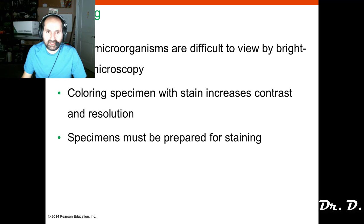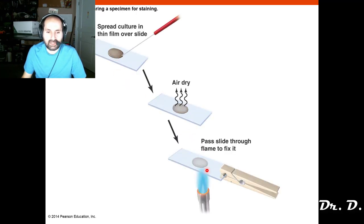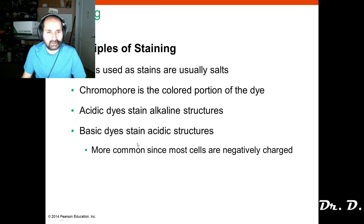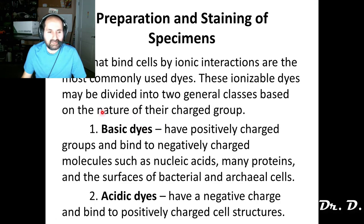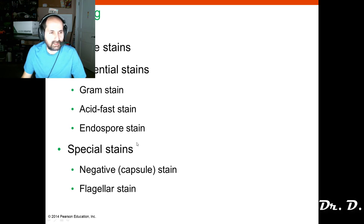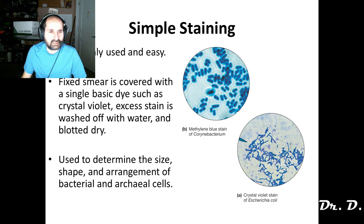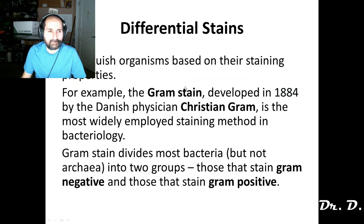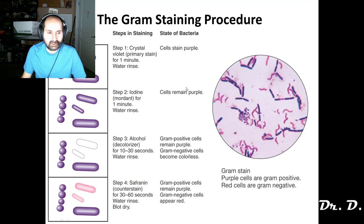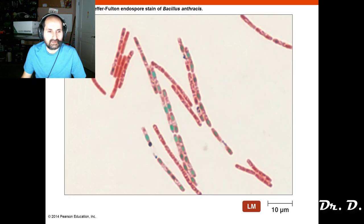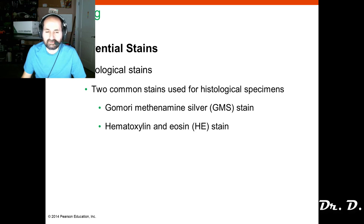Staining is great because it increases contrast. You should know how heat fixing works and why you have to heat fix. Basic dyes are positively charged; acidic dyes are negatively charged. We use basic dyes mostly for staining because cells tend to be negatively charged. Simple staining stains all of the cells — from simple staining you can tell shape and arrangement. Differential staining allows you to differentiate between different types of organisms.